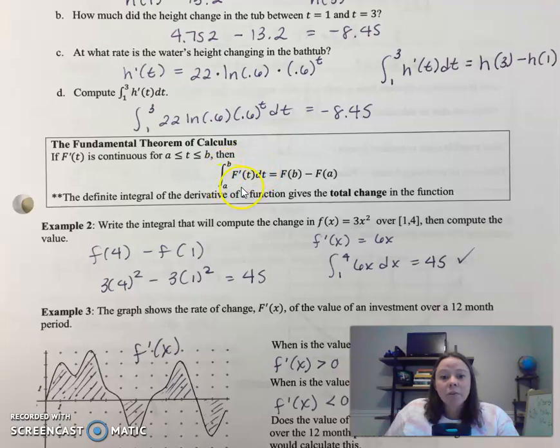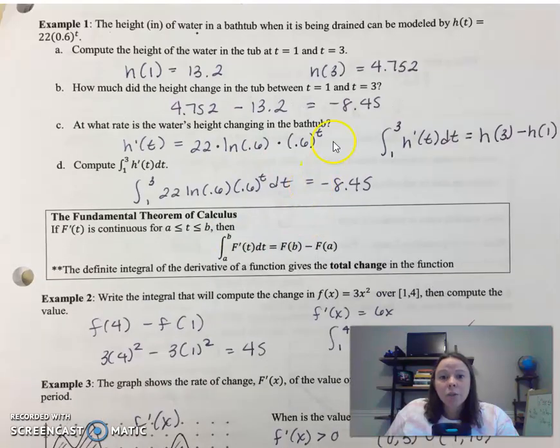So what has happened is we've taken what we call the anti-derivative. This is the anti-derivative of this f prime of t. So it's going back from the derivative to the original function. And we saw that here.